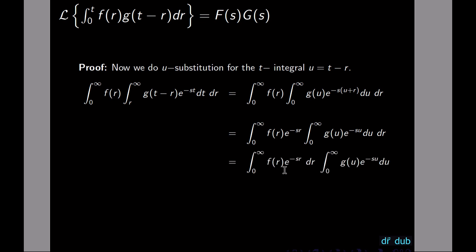We make this a product of two separate integrals: the integral from 0 to infinity of f(r) e to the negative sr dr, times the integral from 0 to infinity of g(u) e to the negative su du. That is exactly the definition of capital F(s) times capital G(s) — the product of the Laplace transforms. That's how we prove the convolution theorem, using reversal of order of integration from multivariable calculus and a simple u-substitution.